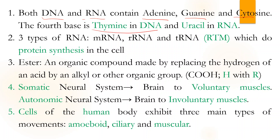DNA will have thymine and uracil — keep that in mind. RNA also has 3 types: mRNA, rRNA, and tRNA.